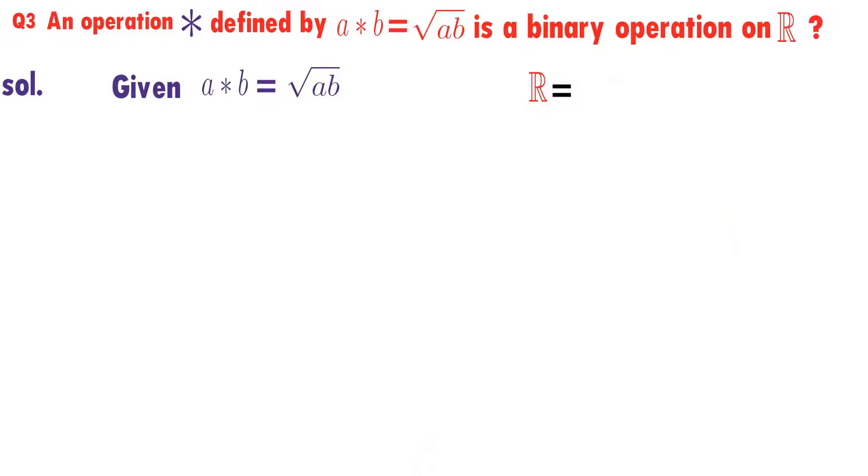What are real numbers? All the numbers between minus infinity and plus infinity are known as real numbers, or we can say real numbers are the union of integers, rational and irrational numbers.